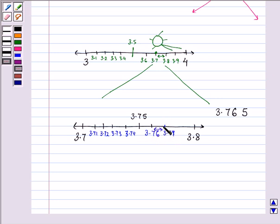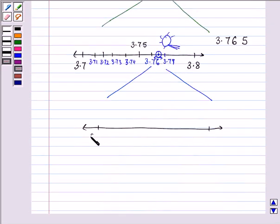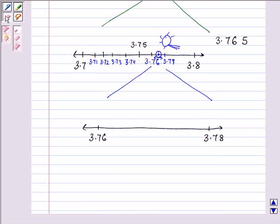Again, it will be somewhere here. So, again, using our magnifying glass, it will come out to be like this. So, it is 3.76. This is 3.77.